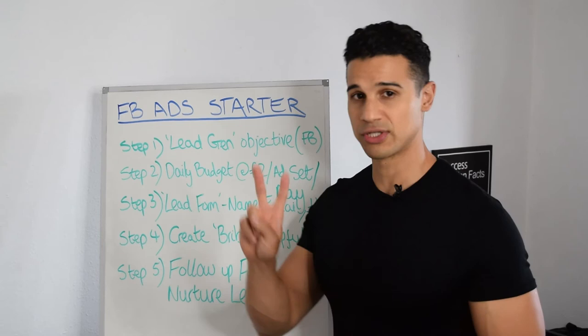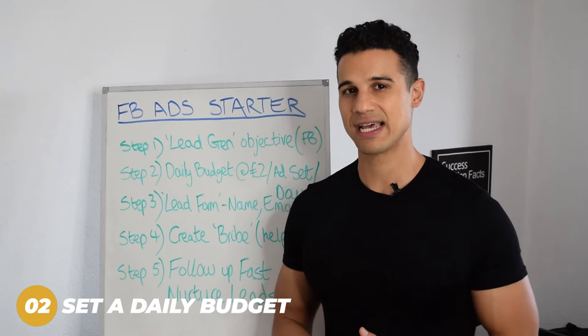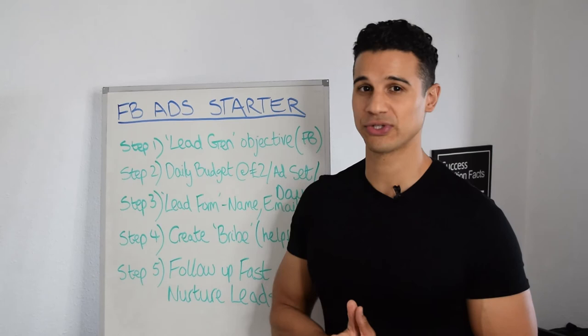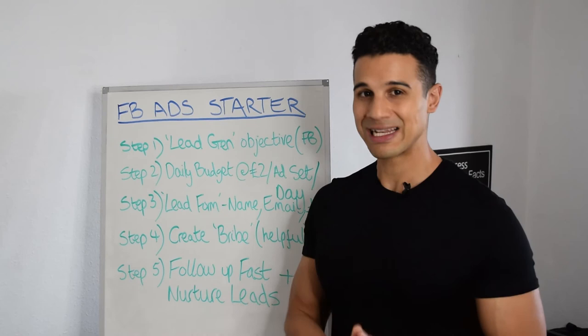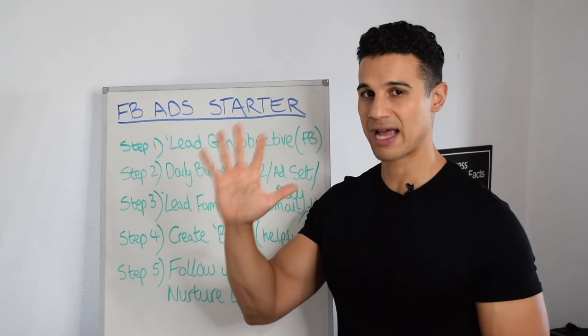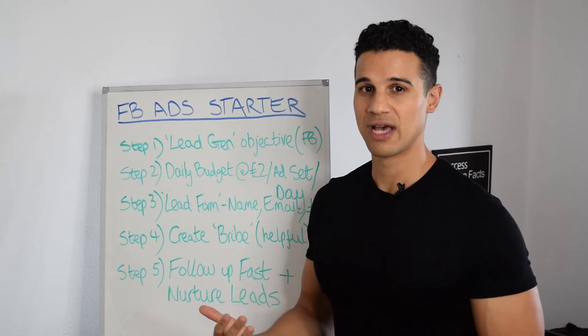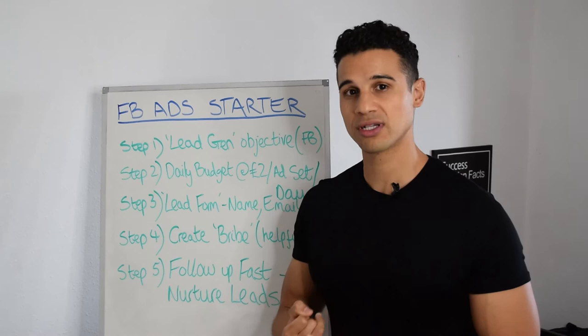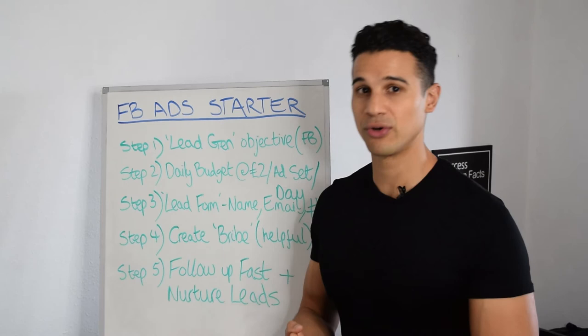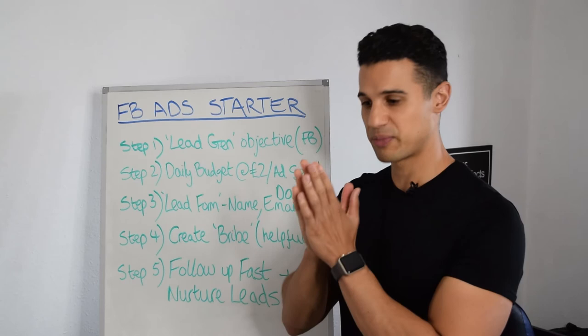Step two of this process is to set a daily budget on each ad set at just two pounds a day. You don't need to have a massive budget when you're starting out — just two pounds a day per ad set is more than enough. You want to have around five different ad sets, so at most you can spend ten pounds a day. You're going to be able to test five different interests that your potential clients would be interested in — maybe other weight loss products, a lifestyle interest, a certain TV show, or certain brands that they wear.